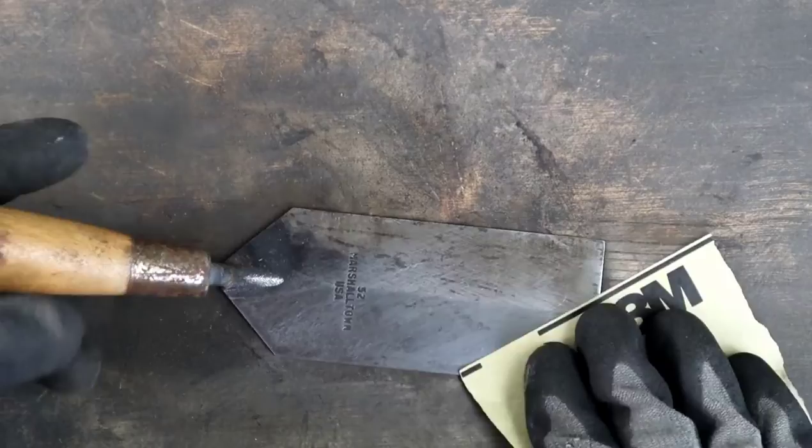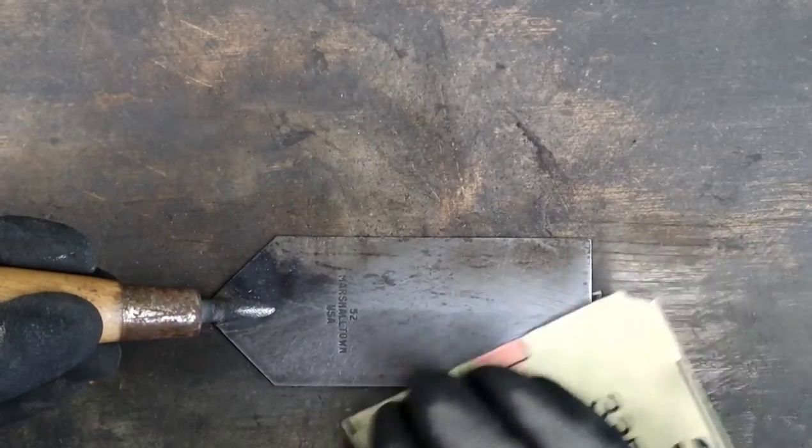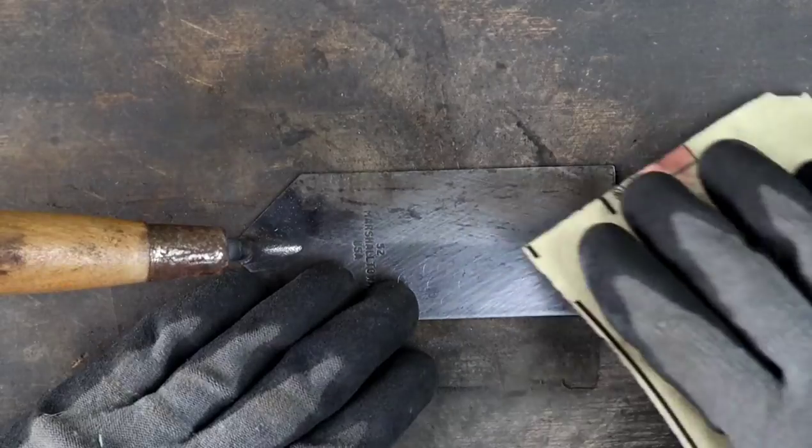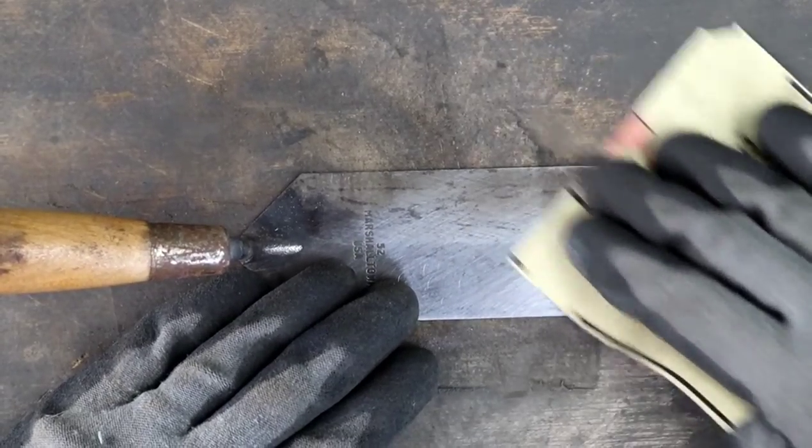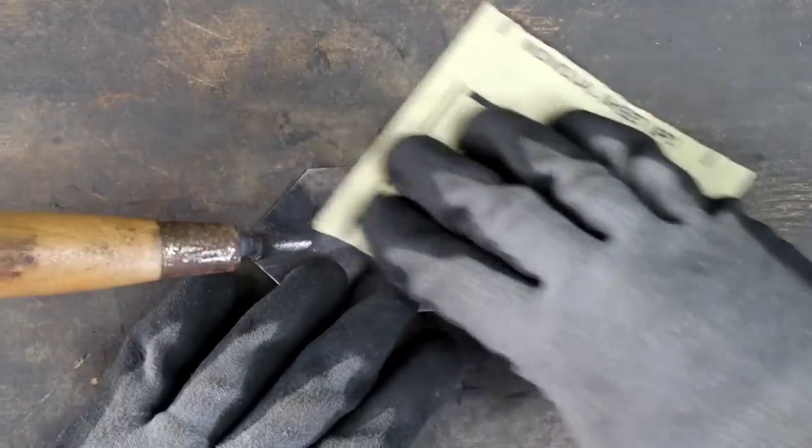Normally, to address this, you would need to sand until you hit the bottom of those pits to give you the smoothest possible surface. The issue with this is that the trowel is only about 1/64th of an inch towards the end of the heel, and you'd be compromising the integrity of the trowel.